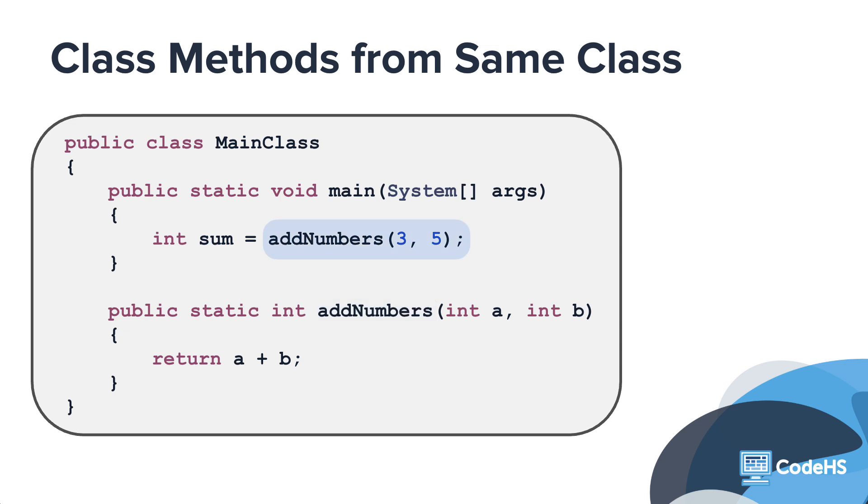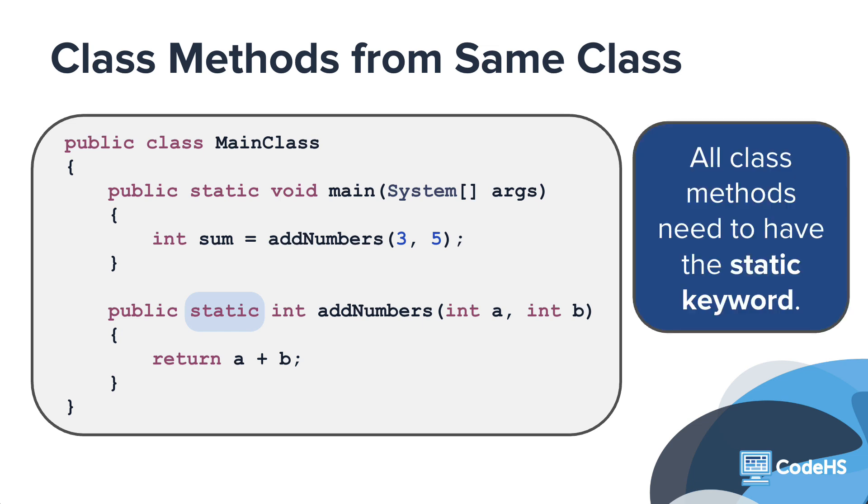The reason you can do this is because of the keyword static in the method's signature. All class methods need to have the static keyword. Without it, it'll be an instance method, and you'll need to create a new object before you can call it.